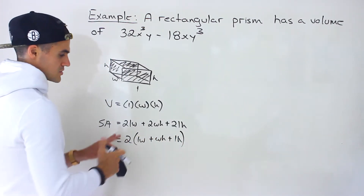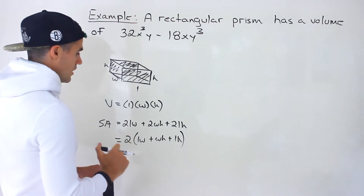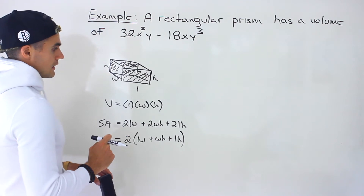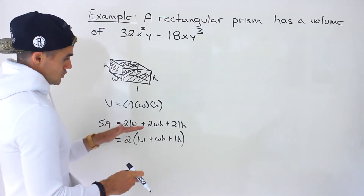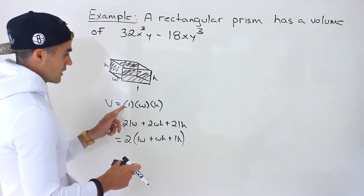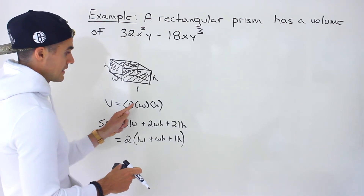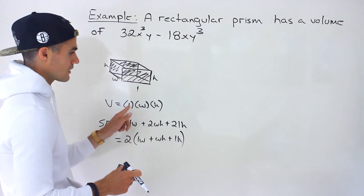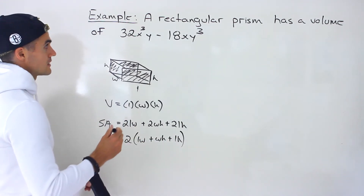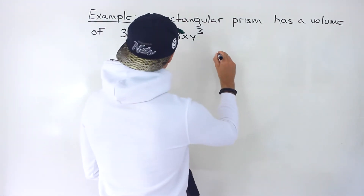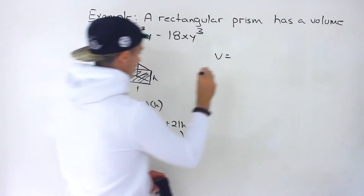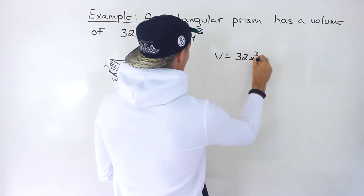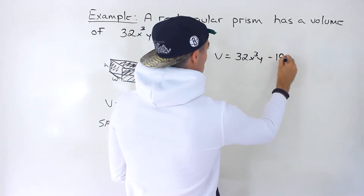Another way to write it is to factor out the 2: 2 times (length times width plus width times height plus length times height). These two forms are the same and we can use either one in part b. Now in order to use the surface area formula we need to find expressions for length, width, and height. We're given the volume as 32x³y minus 18xy³.